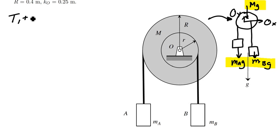And so as a net result here, we can simply say that T1 plus V1 plus U1 to 2 non-conservative is going to equal T2 plus V2, and furthermore, based on the fact that no forces do non-conservative work, we can say that U1 to 2 non-conservative goes to zero.